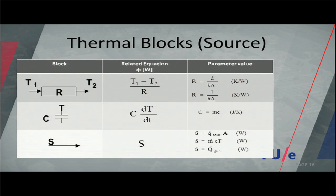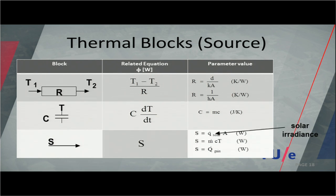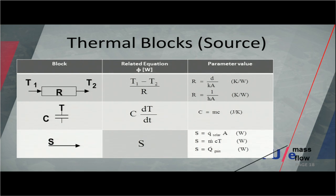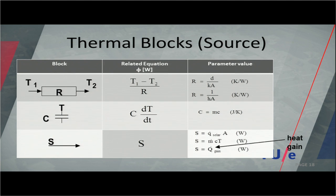The final block is the source block — it's just a constant, and we have different kinds of sources. For example, solar irradiation entering a room, where S equals the solar irradiation times the surface. You can also have convective terms, where the source equals mass flow times specific heat times temperature. And you can have internal gains — think of computers or people — where S equals the internal gain.